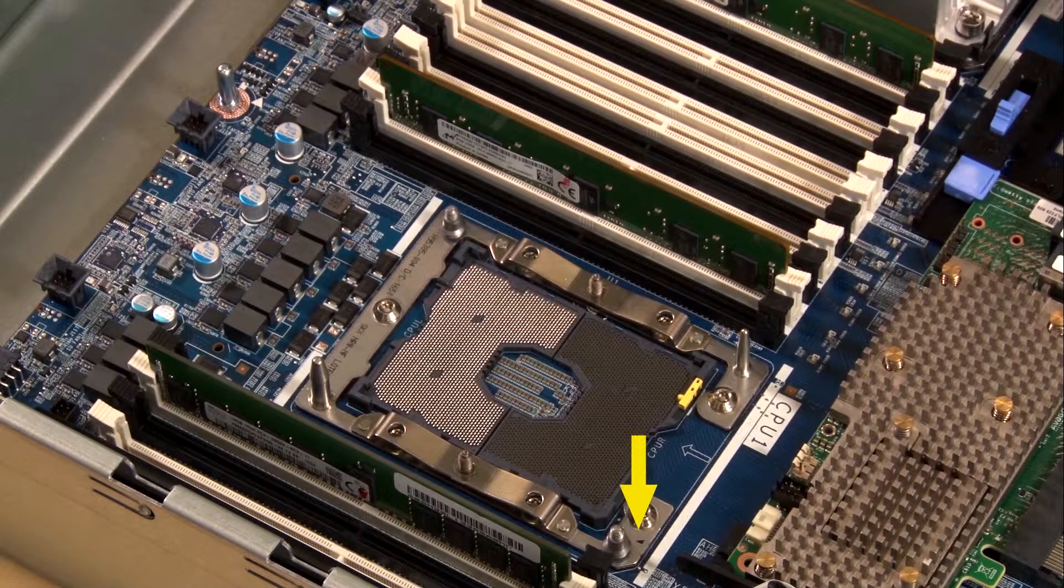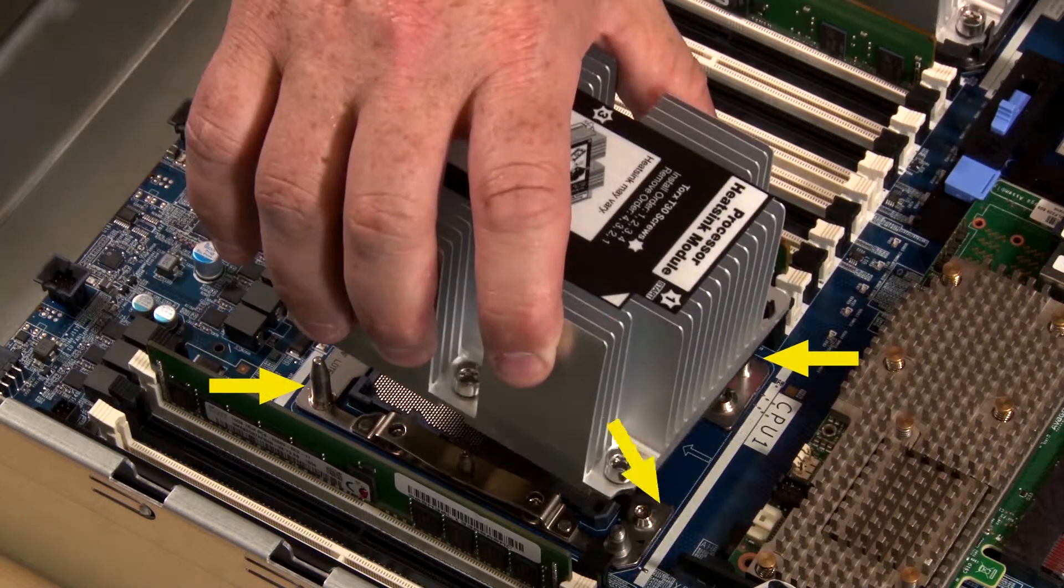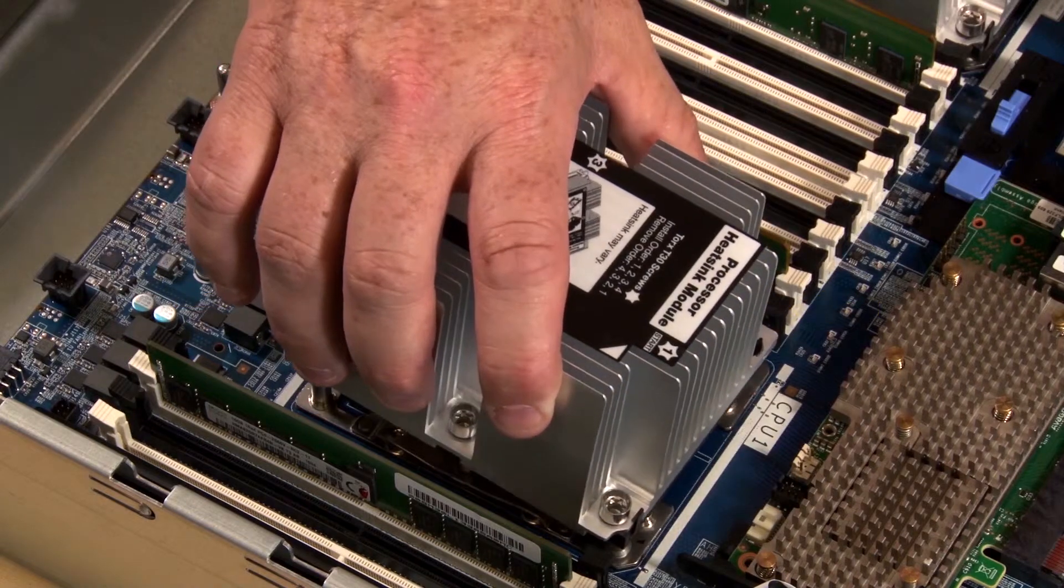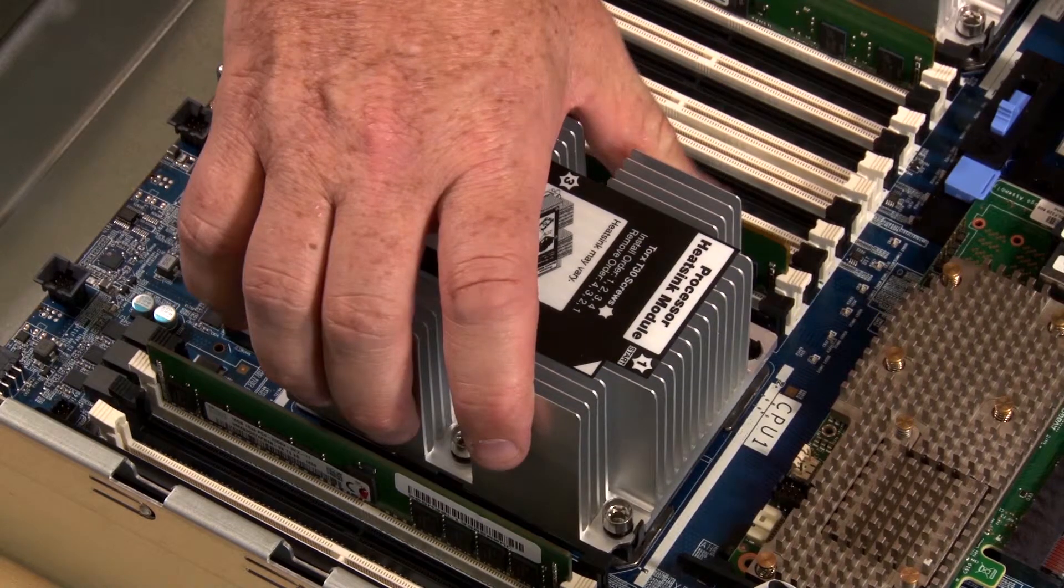Align the triangle mark and guide pins on the processor socket with the triangle mark and mounting holes of the PHM. Carefully lower the PHM straight down into the processor socket.